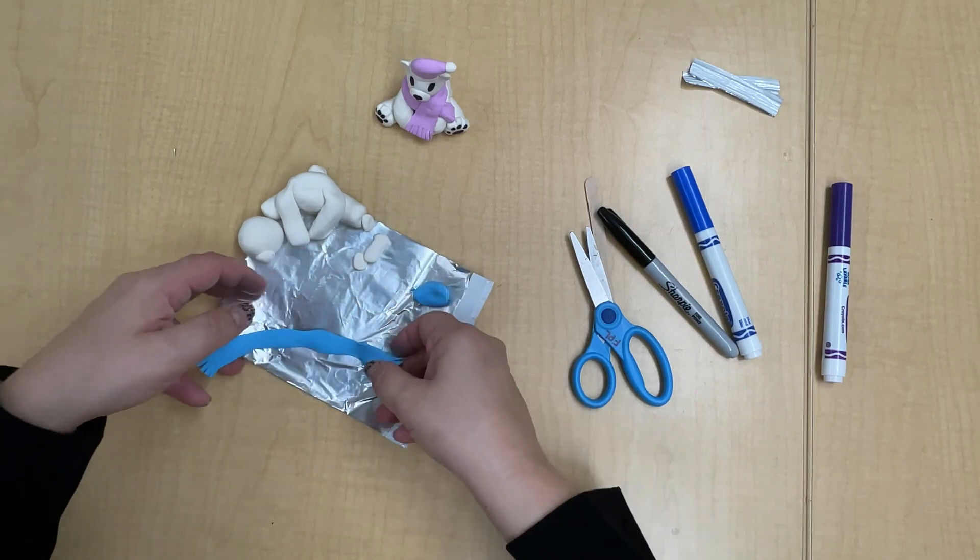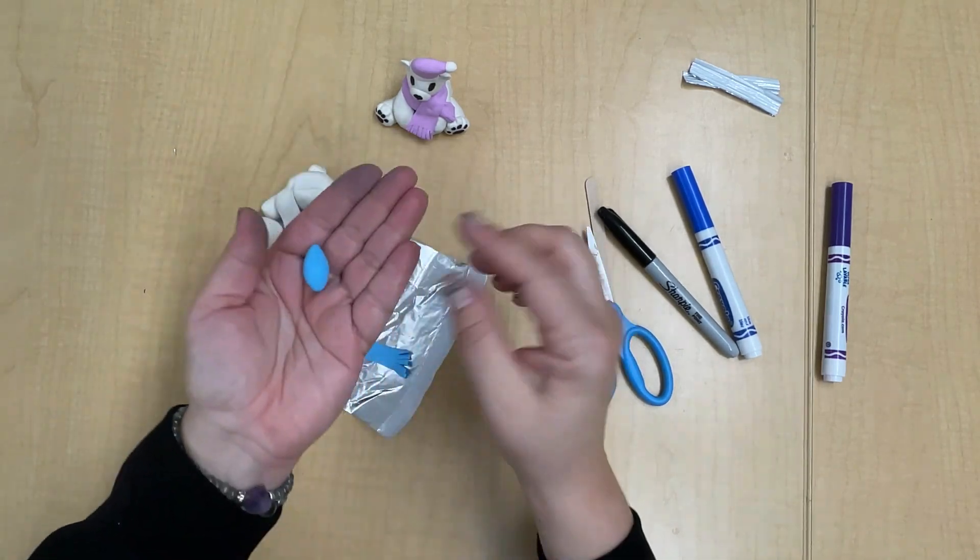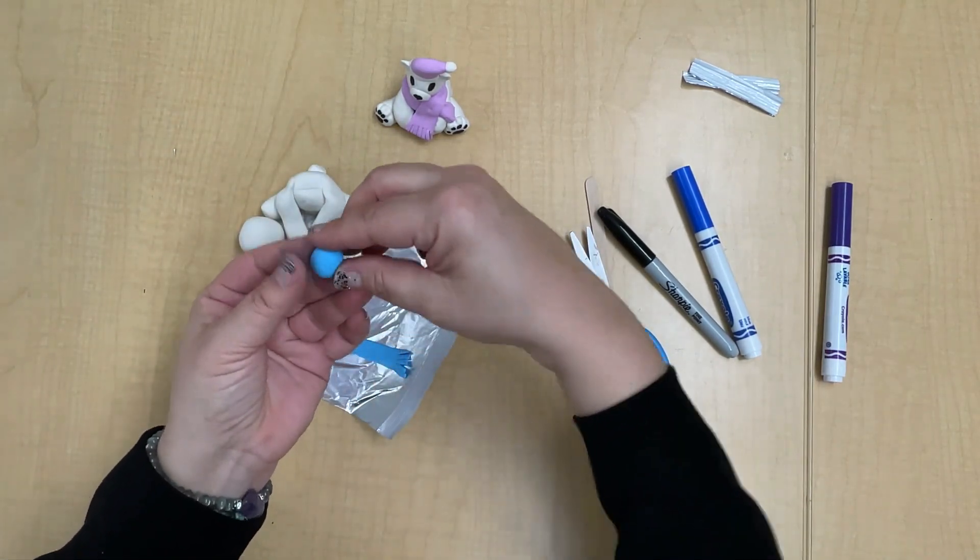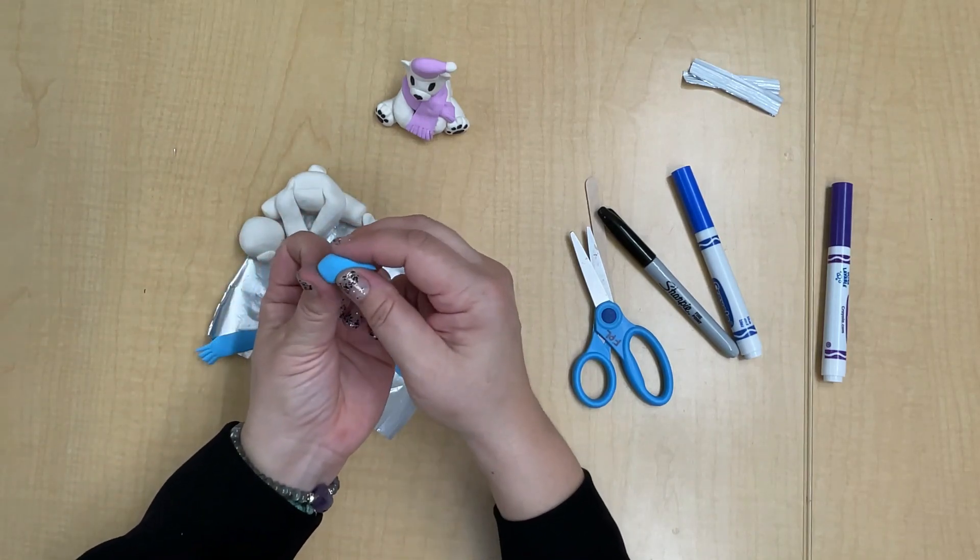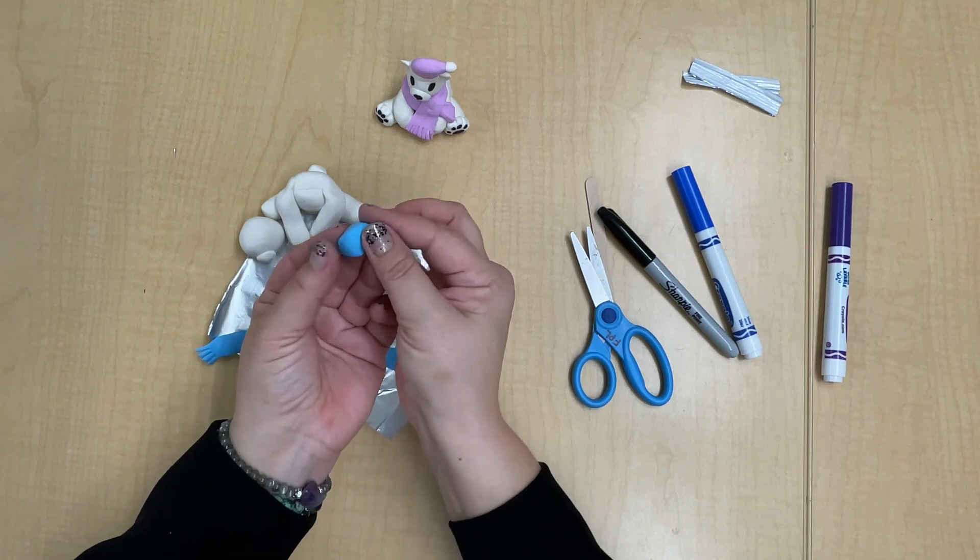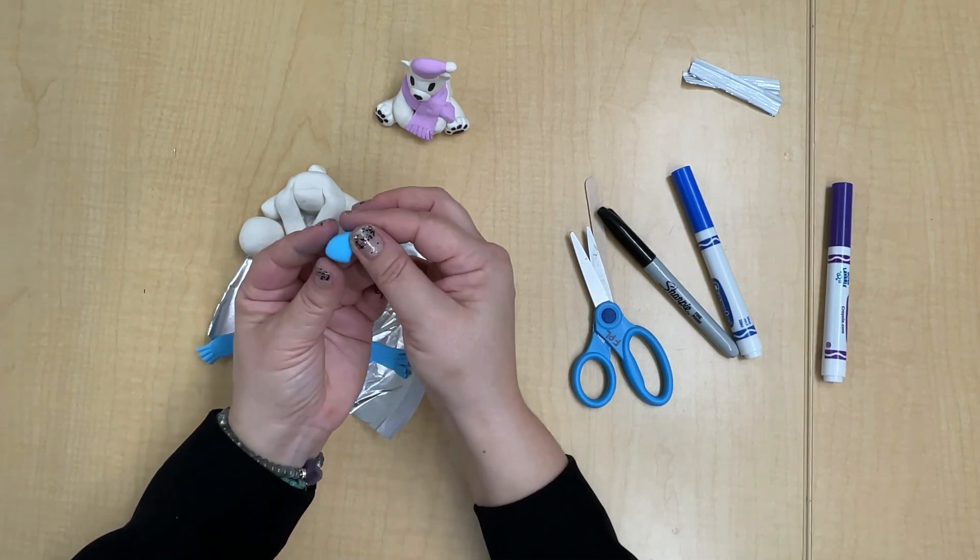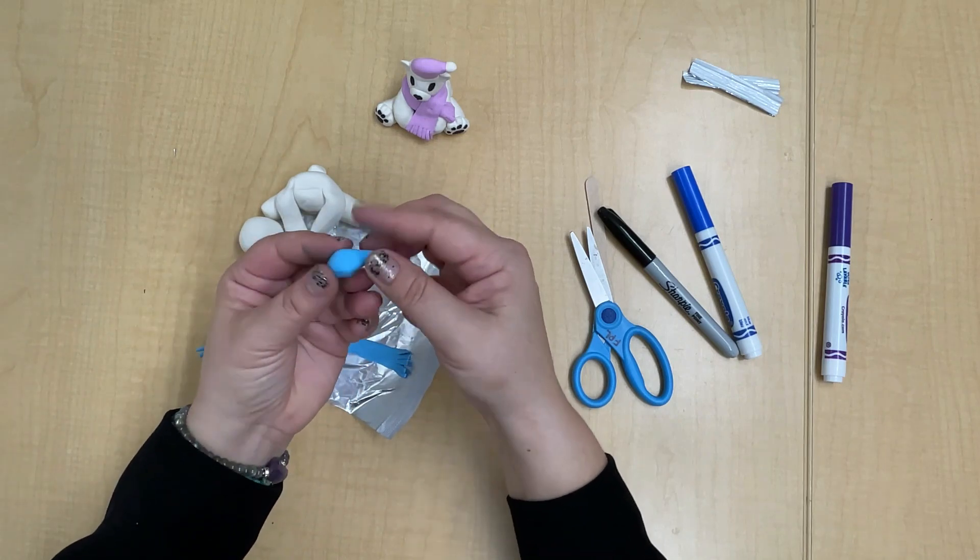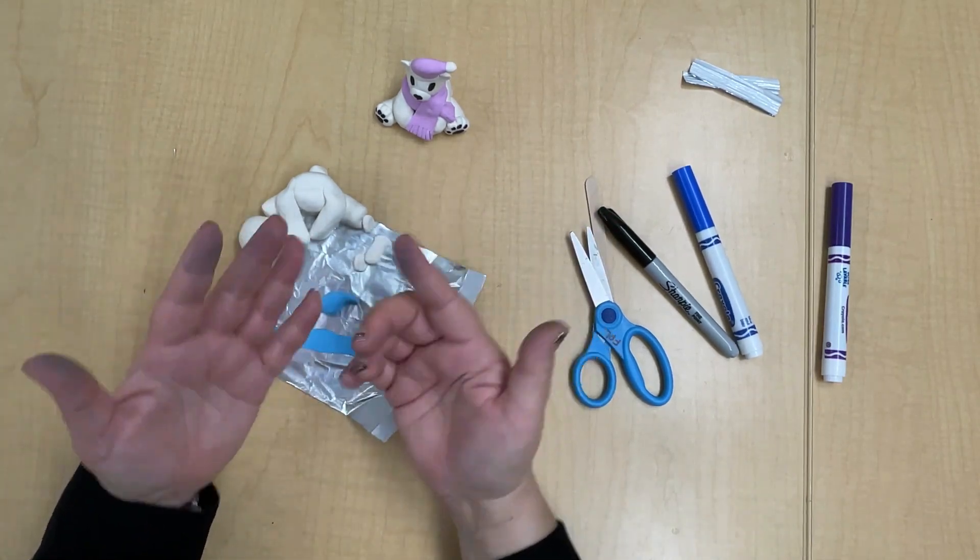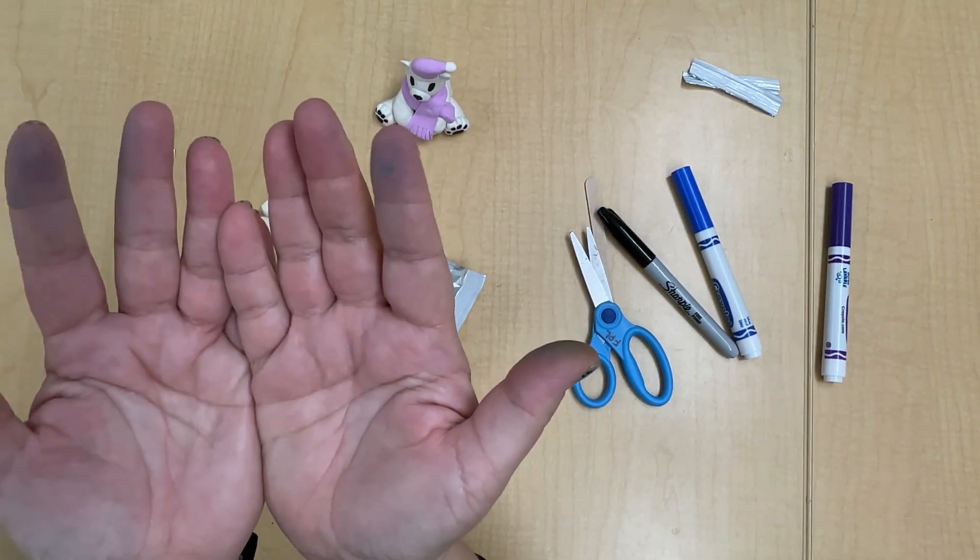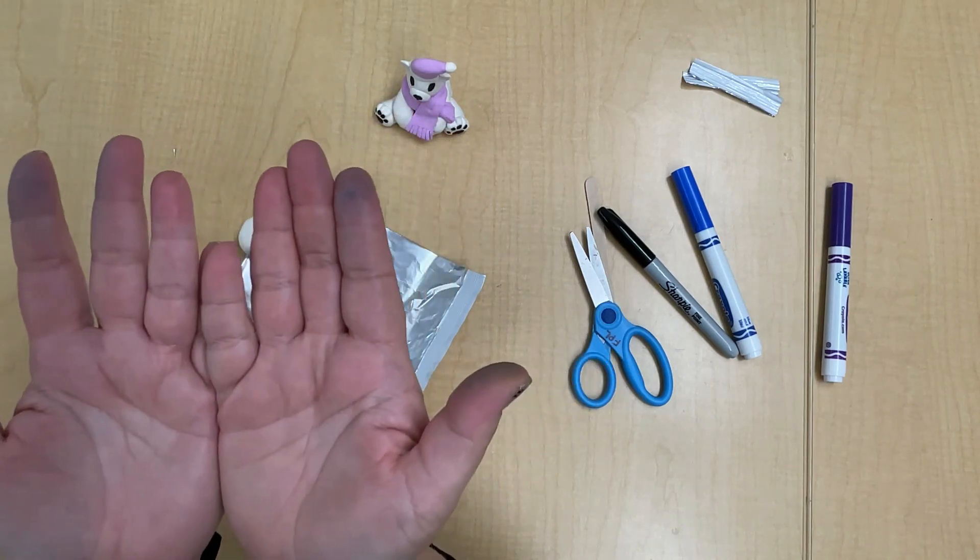All right so there's my scarf and now my hat. I'm just gonna kind of make it into a ball and then pull it out and to the side a little bit. Flatten one end and kind of pull it out and to the side. It's like a little teardrop. I'm going to, before I touch any white, I'm going to go ahead and wash my hands. See how dirty they are? I'm going to go ahead and wash my hands. I'll be right back.